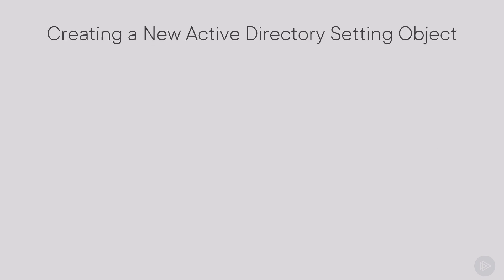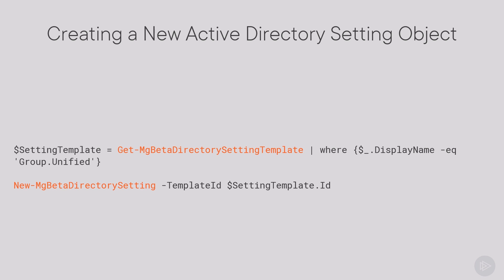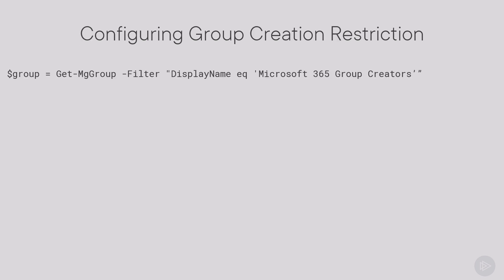If we need to create one, we need to first run Get-MgBetaDirectorySettingTemplate, filter where the display name is Group.Unified, and save it in a variable called setting template. We will then run the New-MgBetaDirectorySetting PowerShell cmdlet and give it the template ID. We will also run Get-MgGroup to get our group and especially the ID of our group, and afterwards we can start creating the group creation restriction.